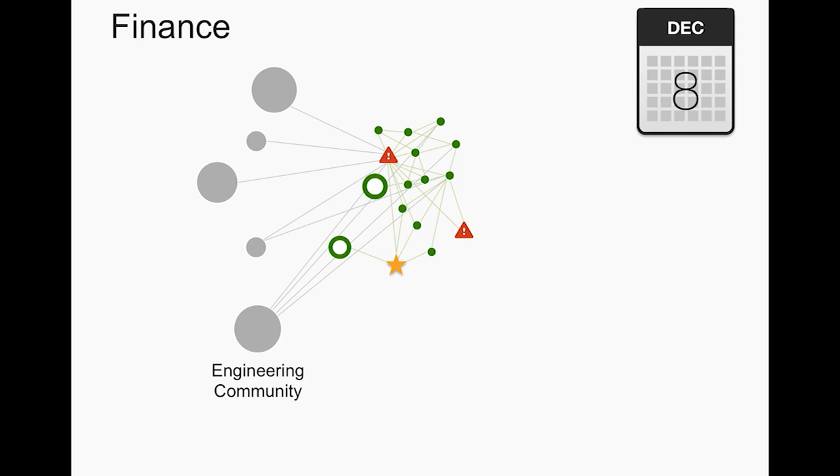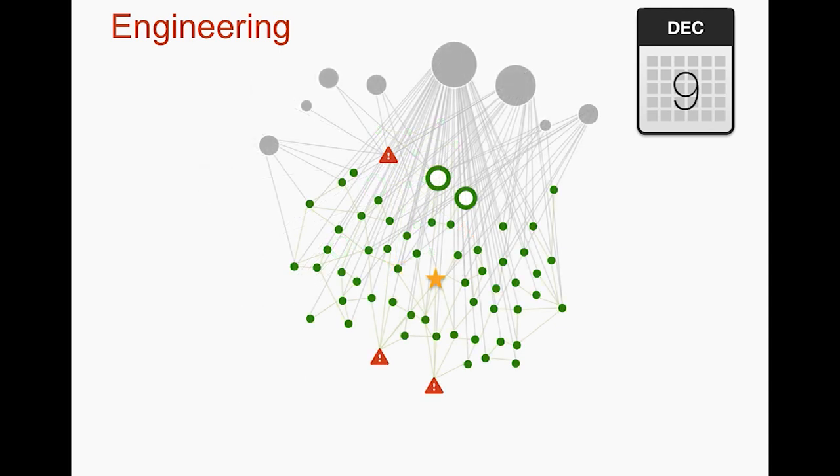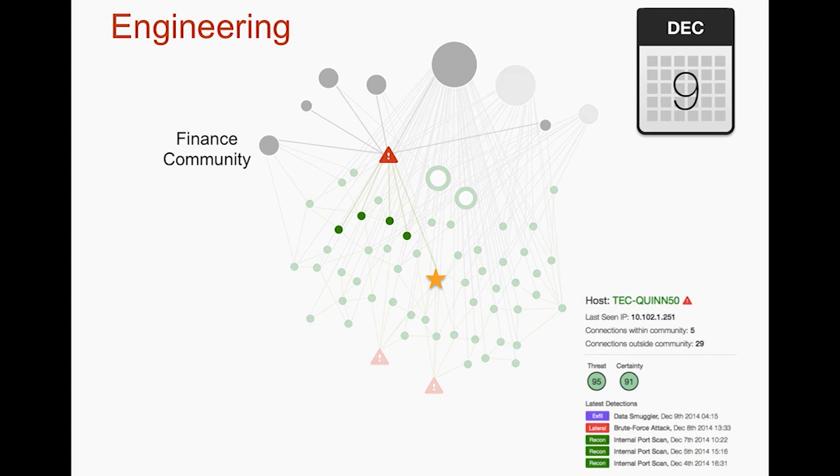So now we've seen a lot of progress in the attack, we've seen lots of new connections, we've seen lots of new behaviors, and on the ninth something really substantial happens. The behavior of this host has changed so much and its communication pattern has changed so much that it has now joined the engineering community. It's moved from finance into engineering, and this is of course a really significant change, and then it directly connects to a key asset within the engineering community. And if we look at the behaviors of this host now, we see exfiltration behavior in addition to the reconnaissance and lateral movement that we saw before.